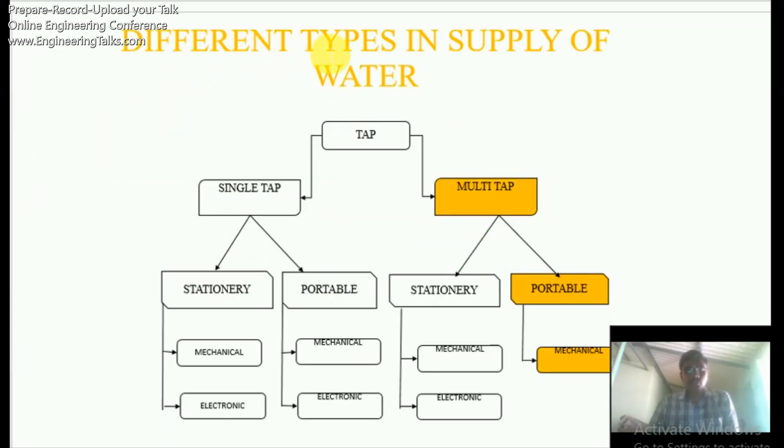Different Types of Supply of Water. In water supply they have Single Tap and Multi-Tap. In Single Tap System we have Stationary and Portable Type. In these we have Mechanical and Electronic Devices. Mechanical devices are used in single tap in houses. Electronic devices work under sensors and are used in malls. Mechanical devices we use in homes and marriage halls use valves and gate valves.